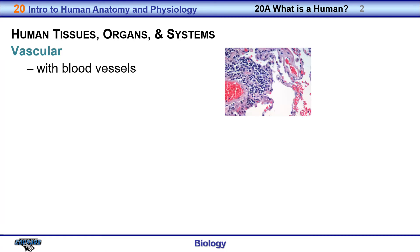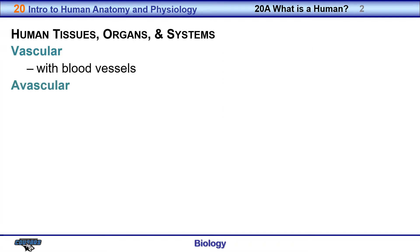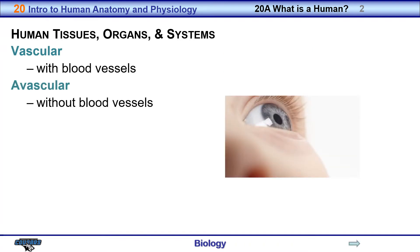We have vascular tissue, and vascular tissue is the tissue that makes up blood vessels — your arteries, your veins, and your capillaries. Then we have tissue that is without blood vessels. For instance, the cornea of your eye has no blood vessels in it, and that allows it to be clear so that you can see well. Avascular just means without blood vessels. Most tissue does have blood vessels, so we call it vascular.